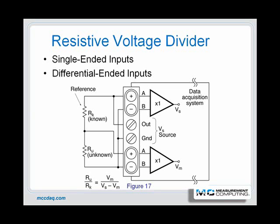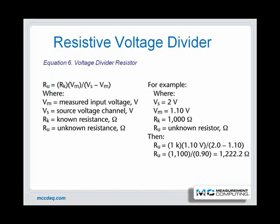The unknown resistor value is calculated from the following equation. This graphic shows us the equation for the voltage divider resistor, where V sub M equals the measured input voltage, V sub S equals the source voltage, R sub K equals the known resistance, and R sub U equals the unknown resistance.